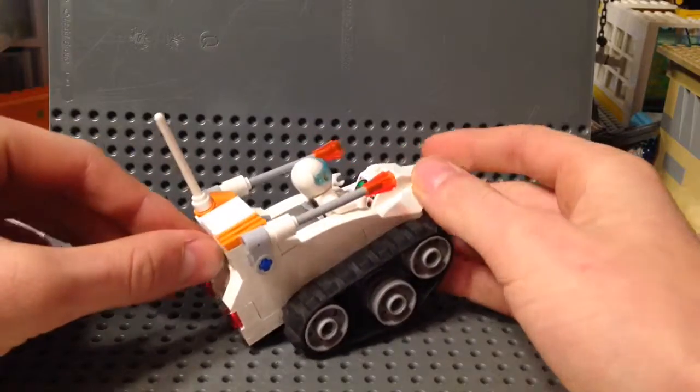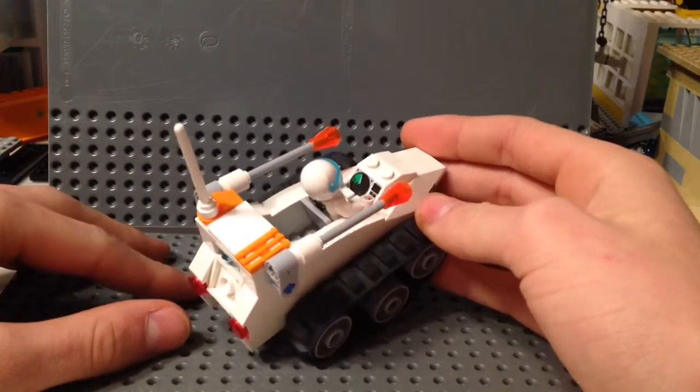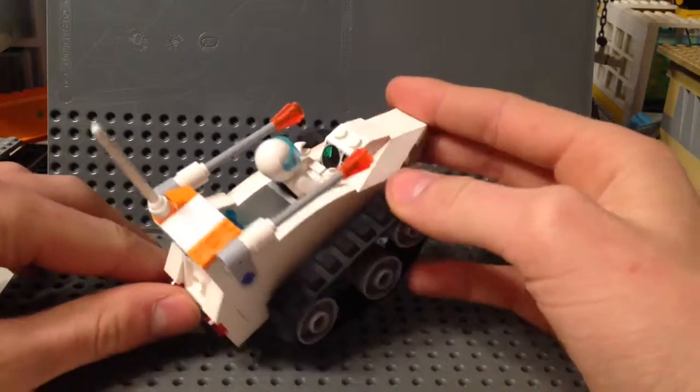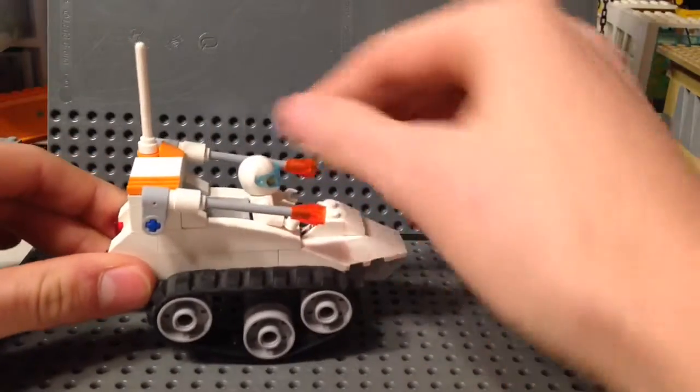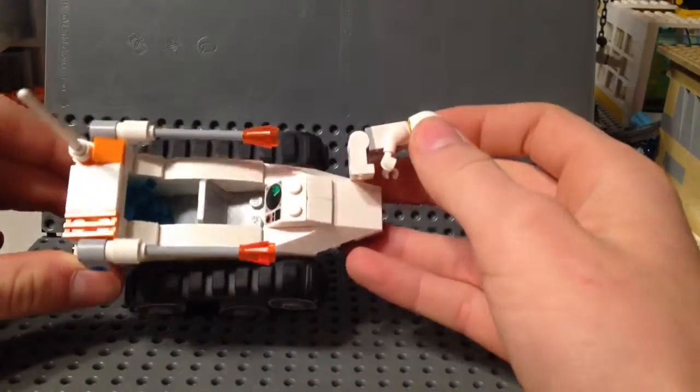It does have one little antenna, just for communications and whatnot. There's room for just one minifigure, as you see, taking them out. There's just a seat in there.